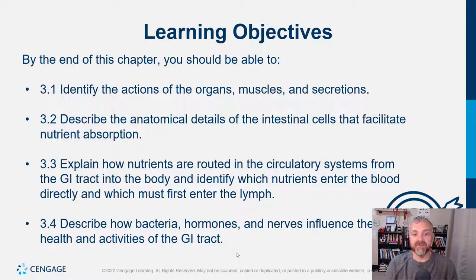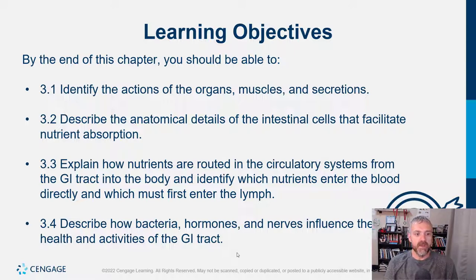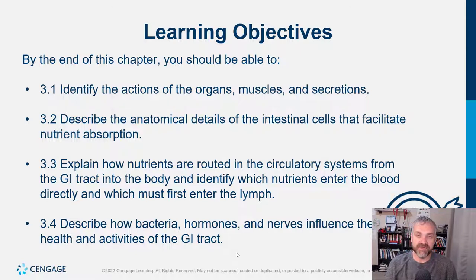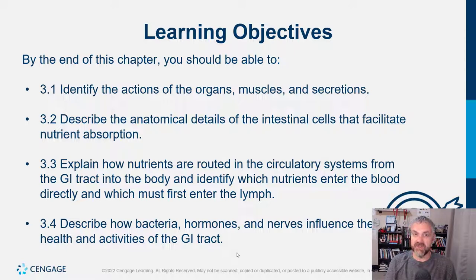Describe the anatomical details of the intestinal cells that facilitate nutrient absorption — I will cover that in good depth. Explain how nutrients are routed through the circulatory systems from the GI tract into the body, and identify which nutrients enter the blood directly and which must first enter the lymph. Most nutrients are digested and absorbed straight into the bloodstream, but your large fats and fat-soluble vitamins are actually going to be carried into the lymphatic system first.